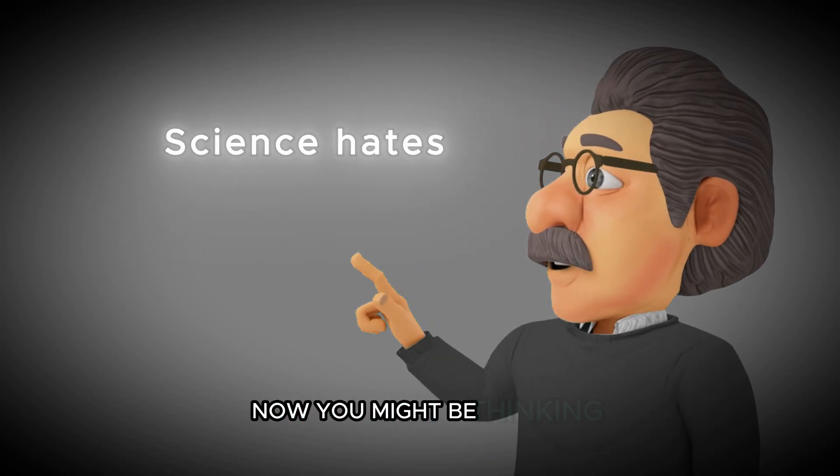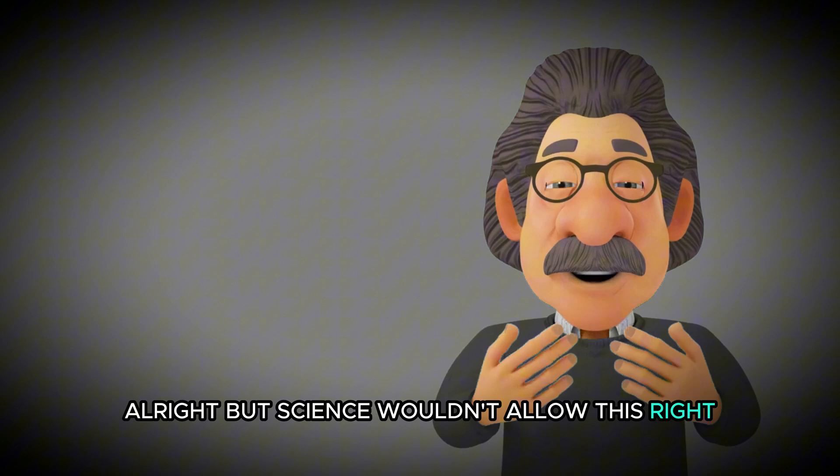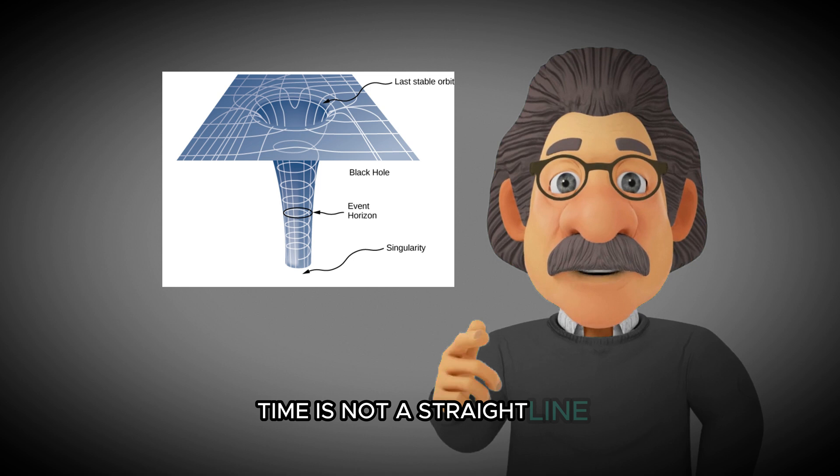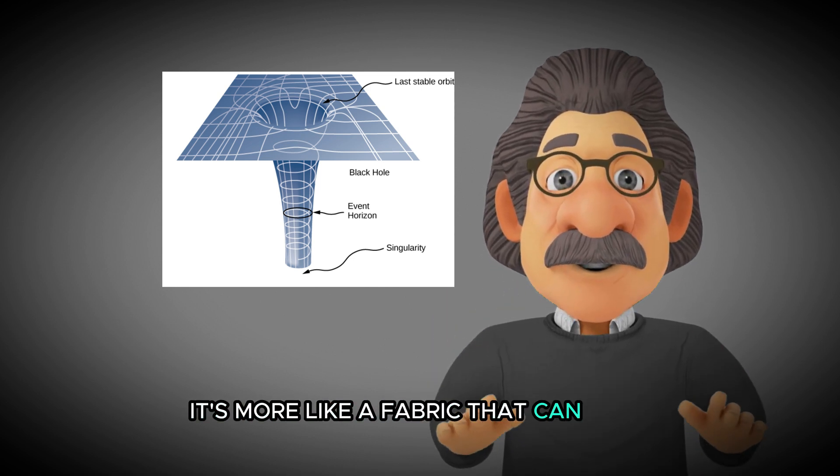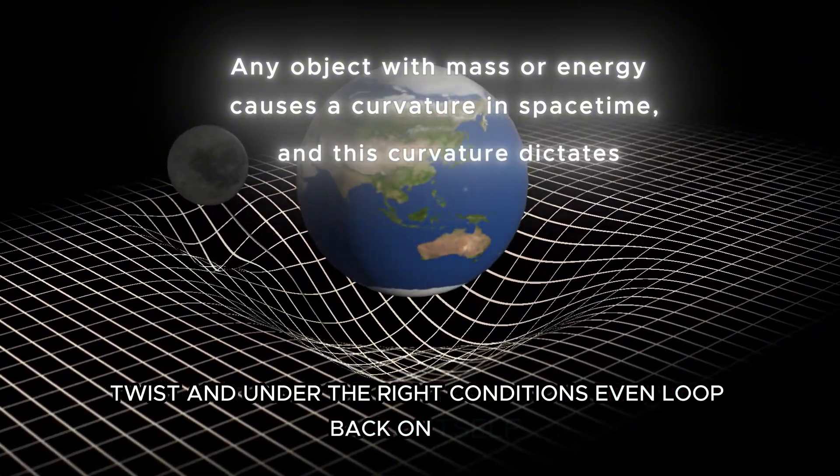Now you might be thinking, all right, but science wouldn't allow this right? Well, not so fast. In Einstein's theory of relativity, time is not a straight line. It's more like a fabric that can bend, twist, and under the right conditions, even loop back on itself.